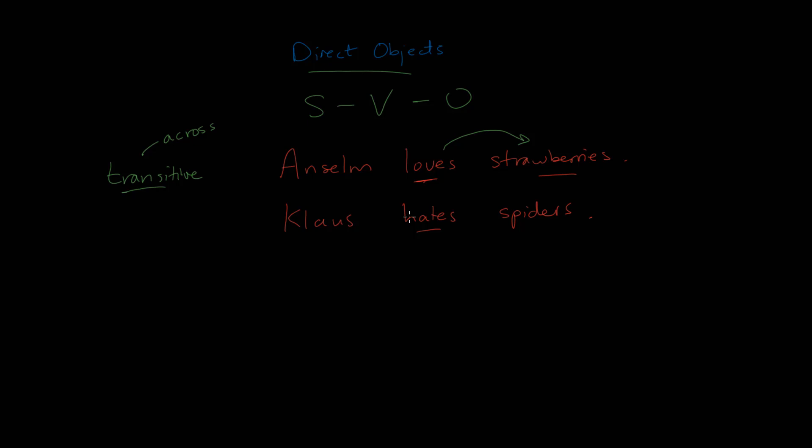On the other hand, we also have verbs that are intransitive, and these are verbs that don't take a direct object. Now, of course, some verbs can be both. Sometimes they're transitive, sometimes they are intransitive.